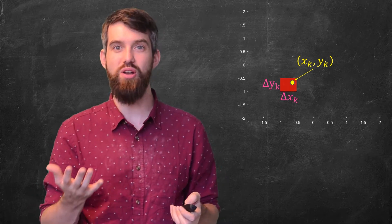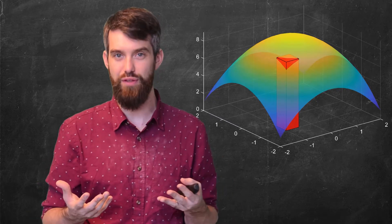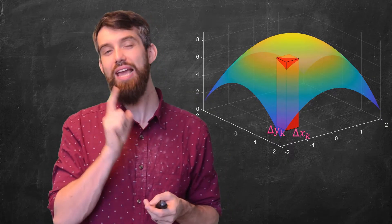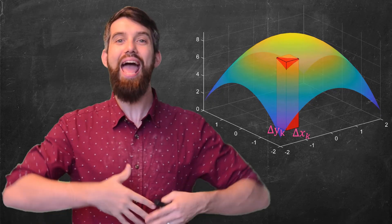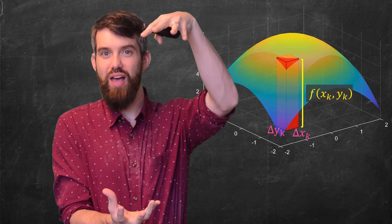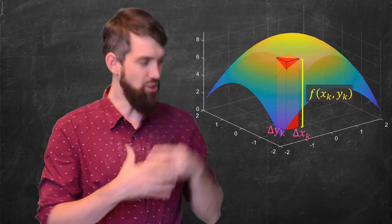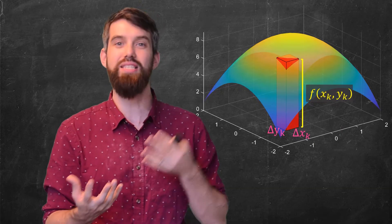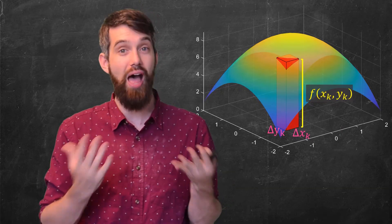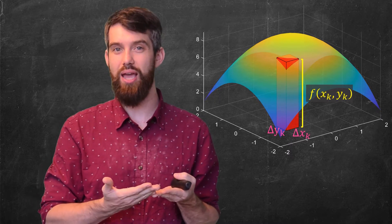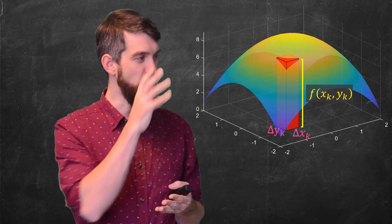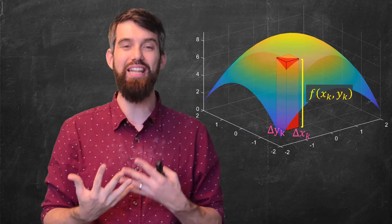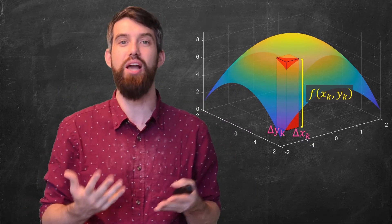Going back to the graph, the base of each box has dimensions delta x_k by delta y_k. If I evaluate f at the chosen point (x_k, y_k), that gives the height of the box. So the volume of this particular box is base times height: delta x_k times delta y_k times f(x_k, y_k). The basic idea is to compute that volume for each box, add them all up, and then take a limit.